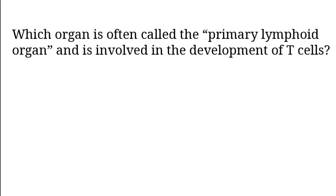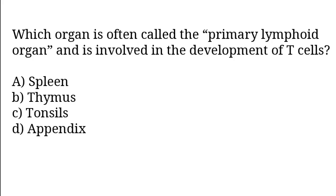Which organ is often called the primary lymphoid organ and is involved in the development of T-cells? A) Spleen, B) Thymus, C) Tonsils, D) Appendix. The correct answer is option B — Thymus.